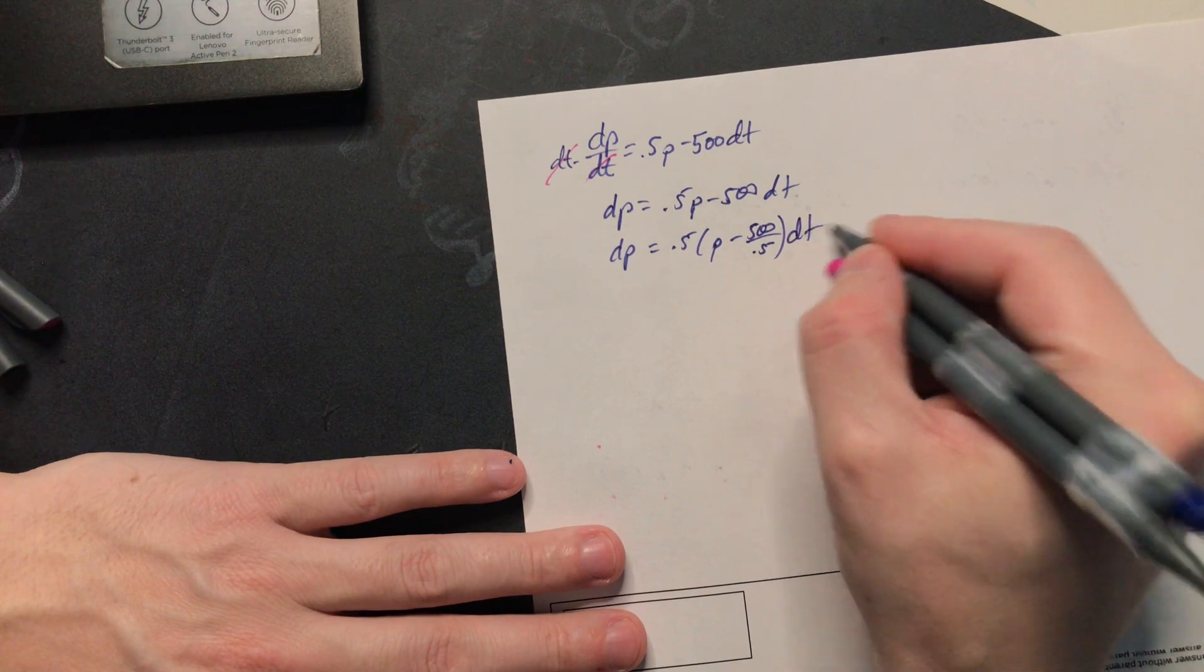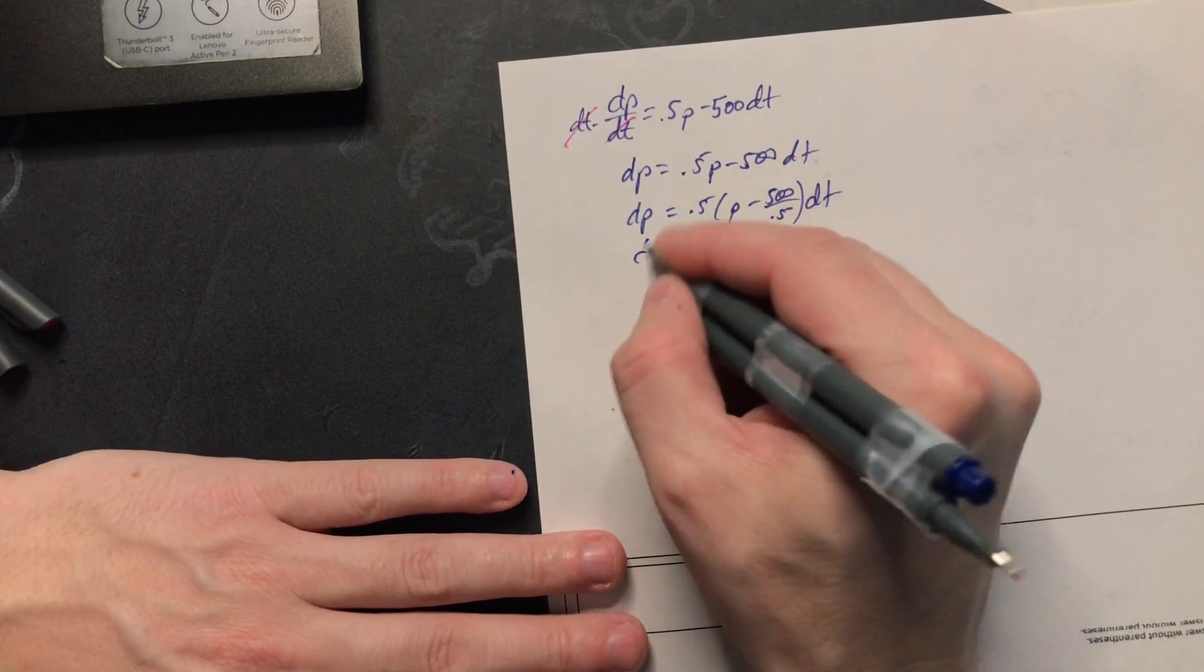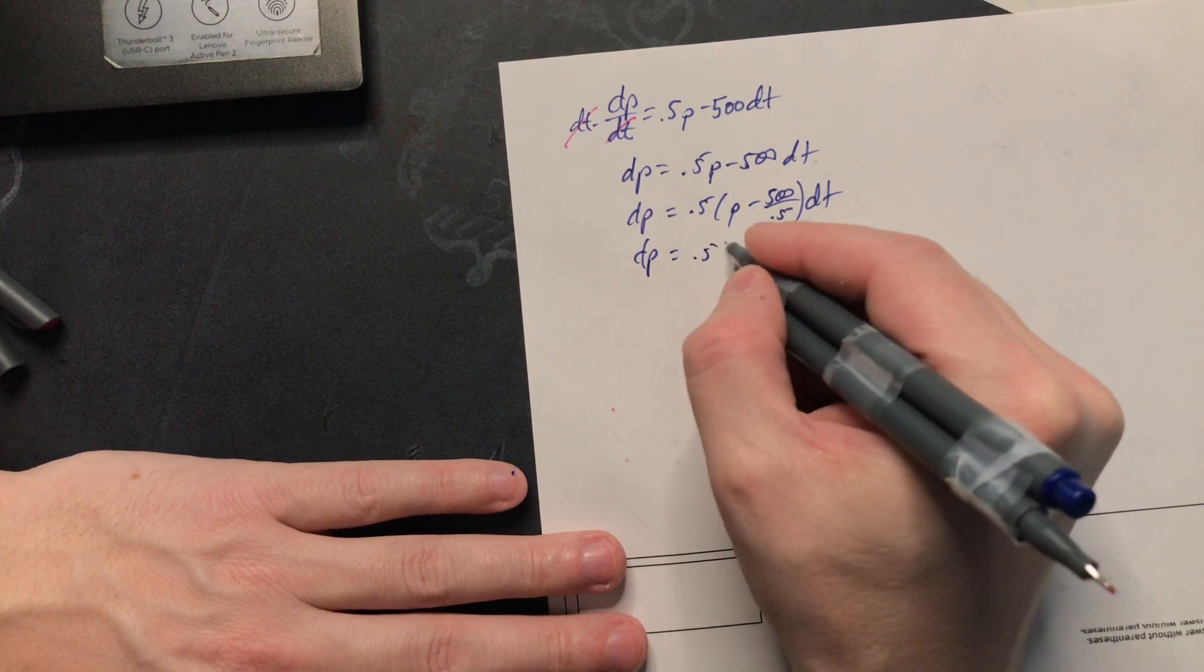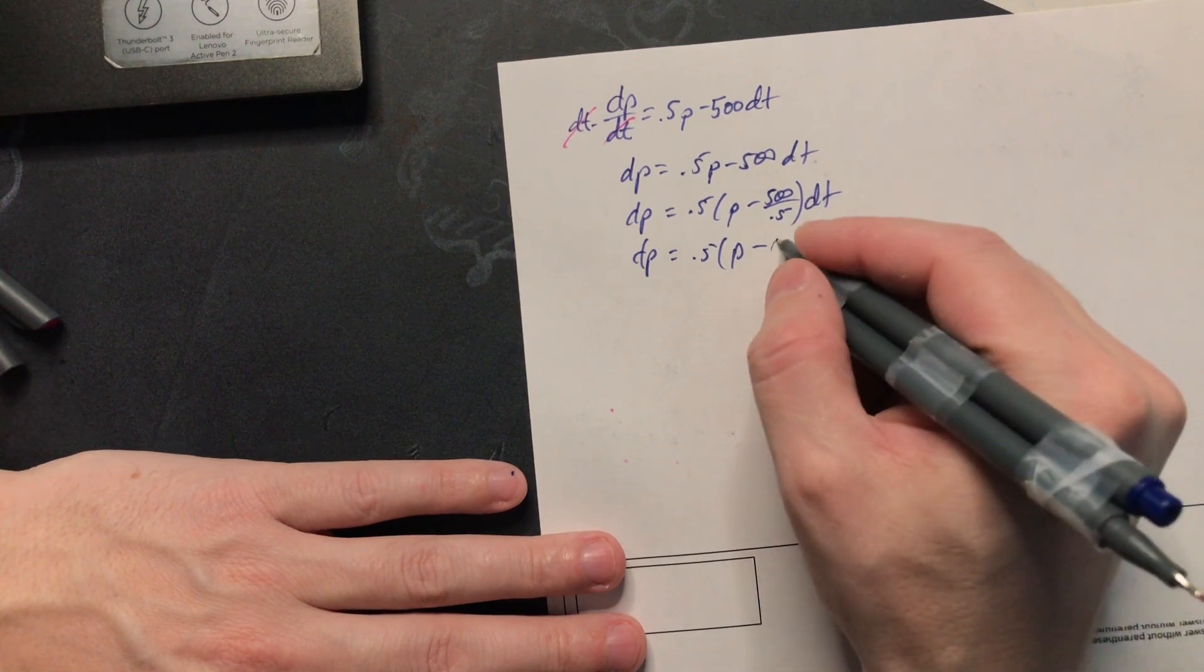Because if you brought this back in it would cancel with the 0.5 in the bottom. So you have dp is equal to 0.5 and then this is p and now half, a half goes into 500 a thousand times. So it's a thousand like this and then dt.